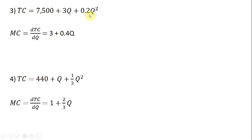And the derivative of 0.2Q² is 0.4Q. Notice what I've done here. I took the 2 exponent, brought it in front, so 2 times 0.2 is where this 0.4 is coming from. Lastly, 2 minus 1 leaves us Q raised to the power of 1, or just Q.